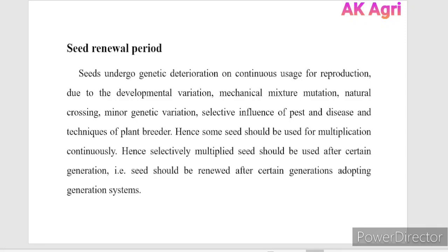Seeds undergo genetic deterioration on continuous usage for reproduction due to developmental variation, mechanical mixtures, mutation, natural crossing, minor genetic variations, selective influence of pest and diseases, and failure of plant technique. These are the major sources of genetic deterioration of a product variety.